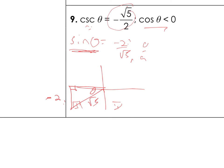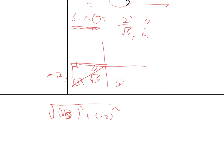The adjacent equals the square root of the hypotenuse squared minus the opposite squared: square root of 5 minus 4 equals square root of 1, which is 1. But it's going left, so it's negative 1. Now I have all the sides of the triangle labeled.